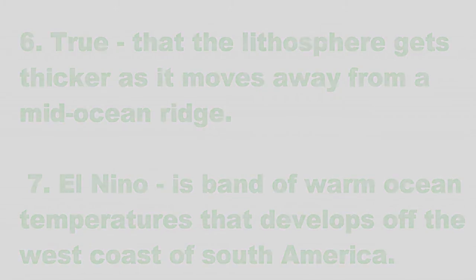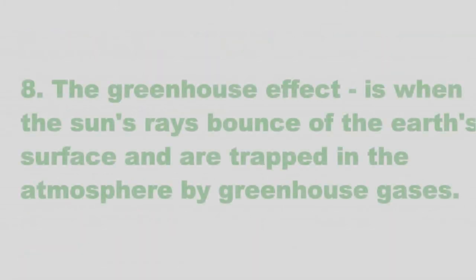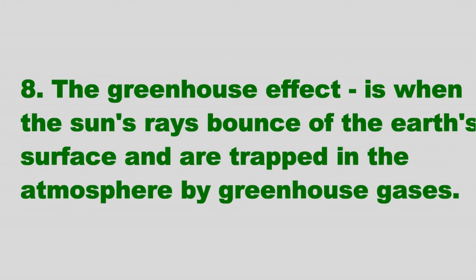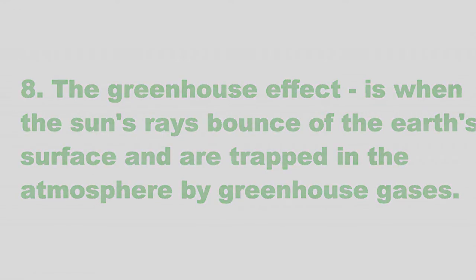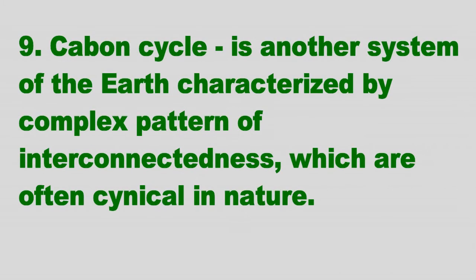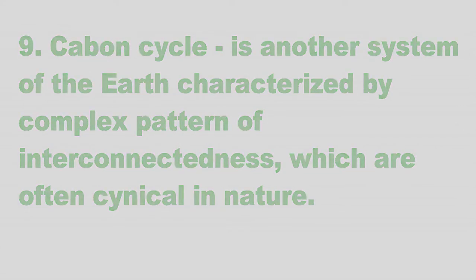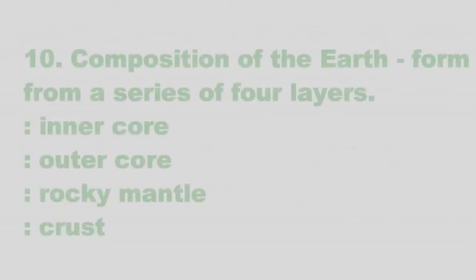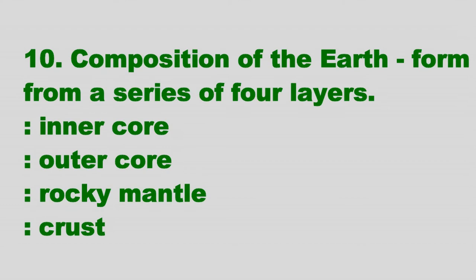Eight: the greenhouse effect is when the sun's rays bounce off the Earth's surface and are trapped in the atmosphere by greenhouse gases. Nine: the carbon cycle is another system of the Earth characterized by a complex pattern of interconnectedness, which is often cyclical in nature.